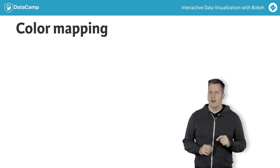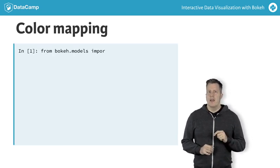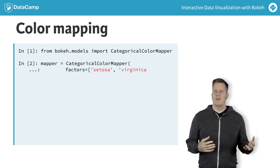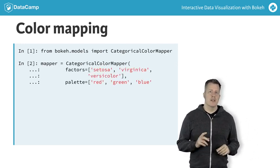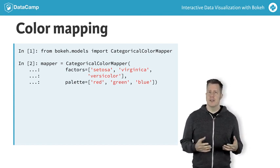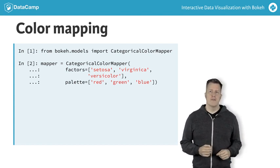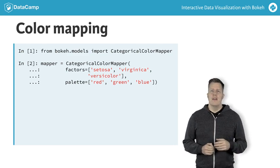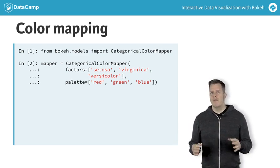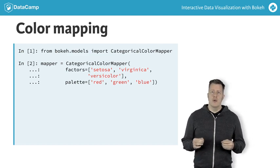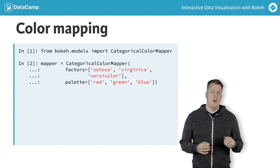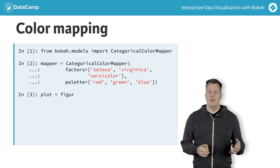First, we need to create a categorical color mapper, which we import from bokeh.models. The color mapper needs to be configured with two arguments. The first is a list of the values to map — in this case, the three species names from the data: Setosa, Virginica, and Versicolor. Next, we also have to supply a palette, which is just a list of colors. We provide an explicit palette of red, green, blue, but there are many built-in palettes available in the bokeh.palettes module that can be used as well.